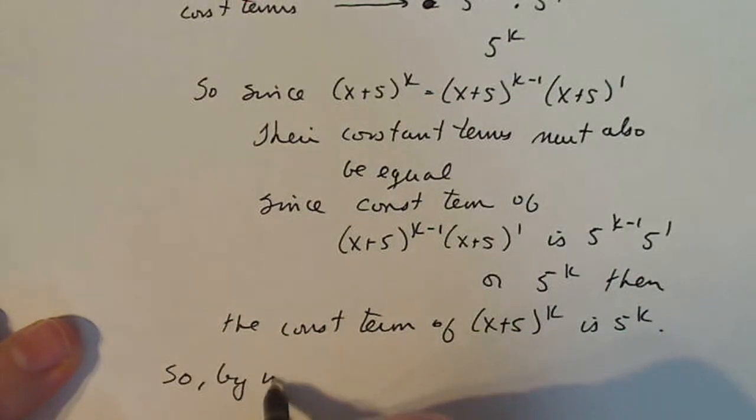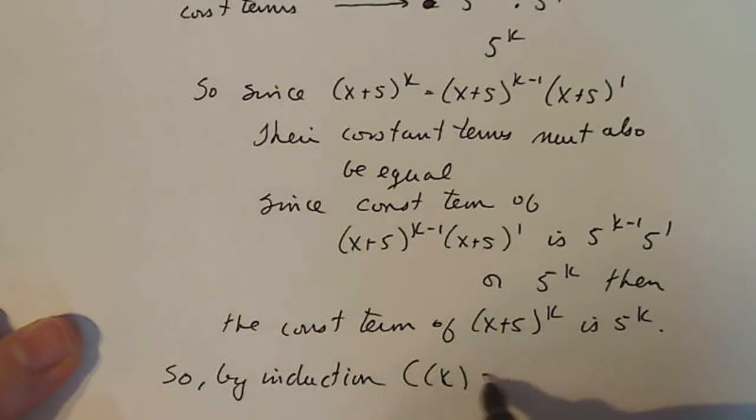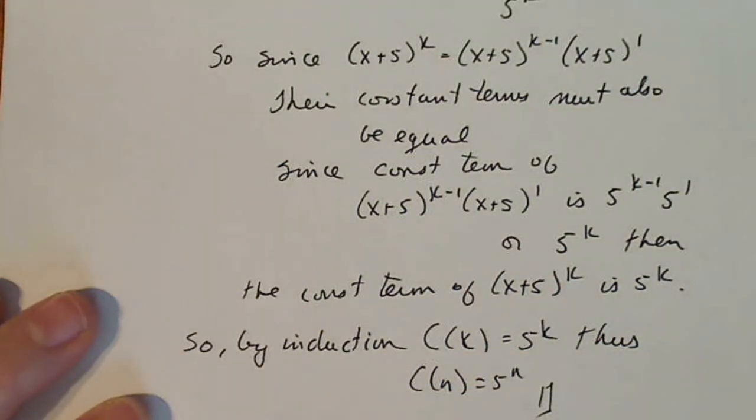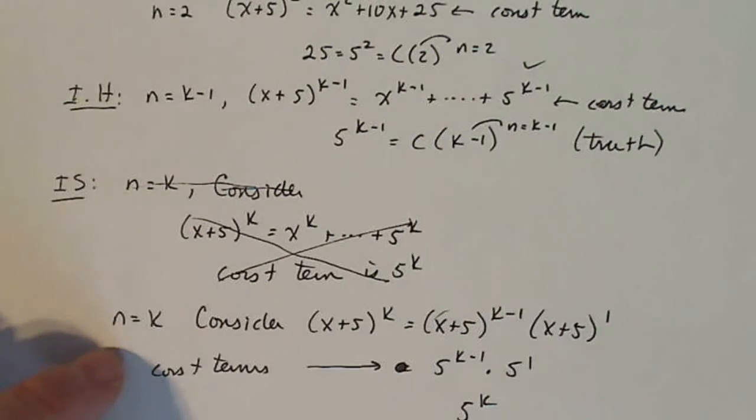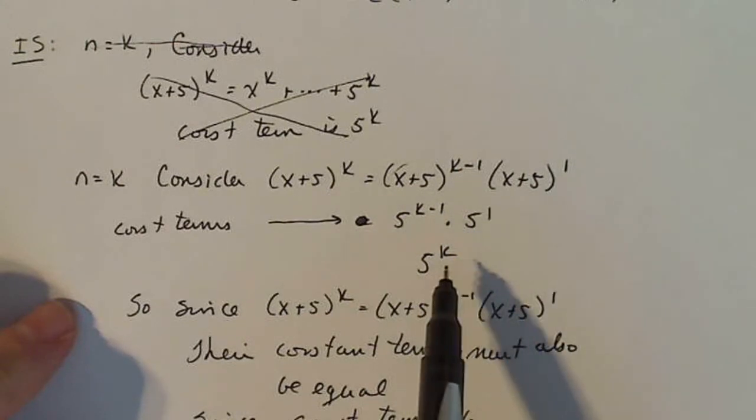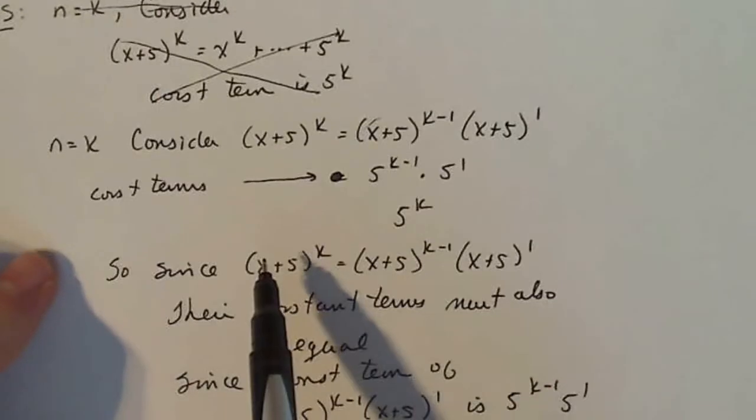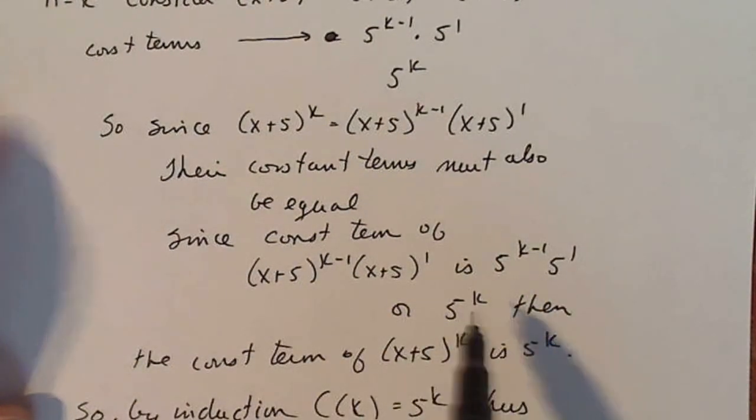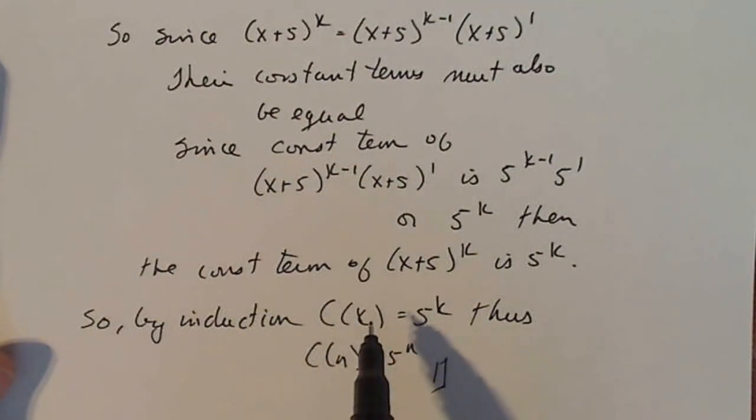So by induction, C(k) equals 5^k, then C(n) equals 5^n, and we're done. See, that is a little tricky. The way that you word it makes a difference. So if I go back again, this seems like I'm done, but I'm not using induction here. So I have to think about how do I utilize this fact here. So I consider those two things are equal, those are the constant terms, that gets me somewhere. Since algebraically that's true, their constant terms has to be equal. So since the constant term of this side is 5^k, then the constant term of the other side is 5^k. So by induction, C(k) is 5^k, so C(n) is 5^n. Pretty cool proof.